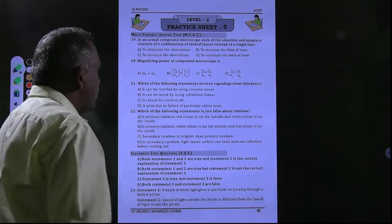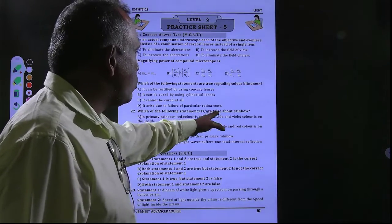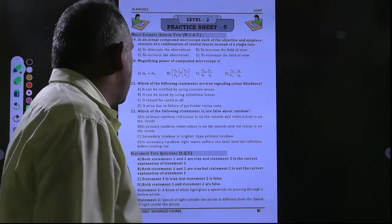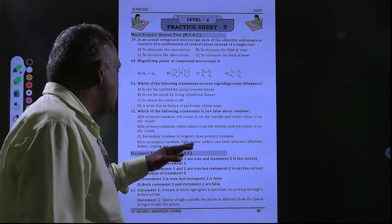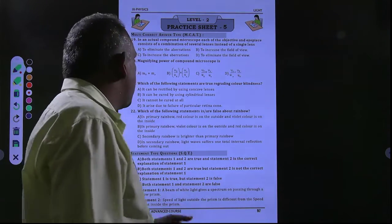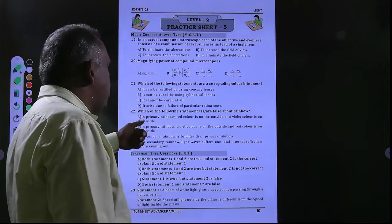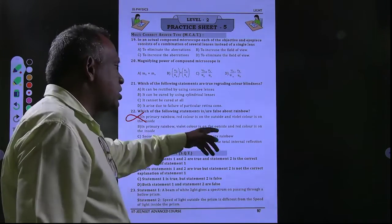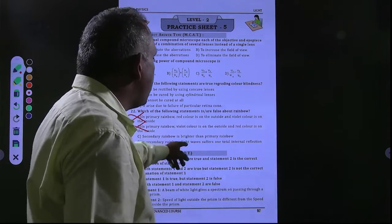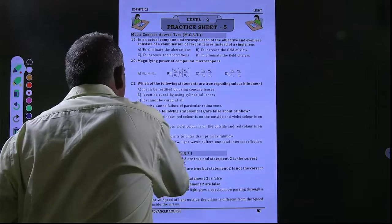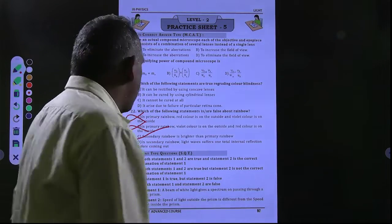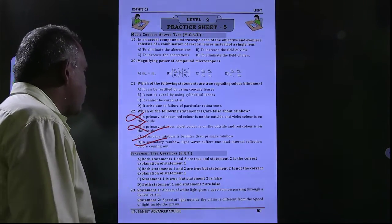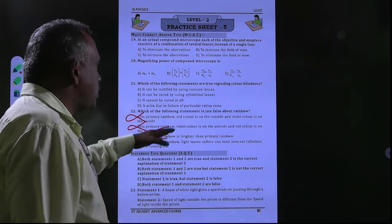Next, question 22: which of the following statements are true or false about the rainbow? There is a primary rainbow and a secondary rainbow. In the primary rainbow, red color is on the outside and violet is on the inside — this is the correct true statement. The statement that violet is on the outside and red on the inside for the primary rainbow is wrong. Secondary rainbow is brighter than primary rainbow is a false statement. Secondary rainbow always suffers total internal reflection before coming out — these are the false statements.